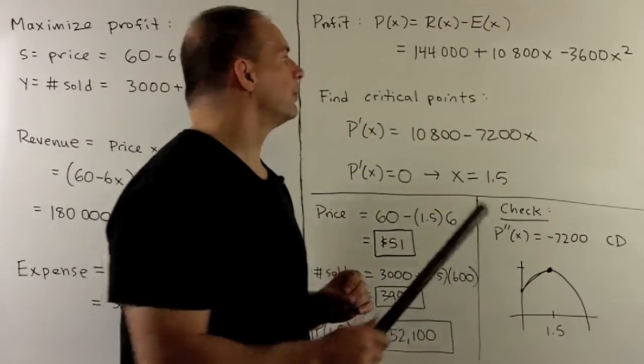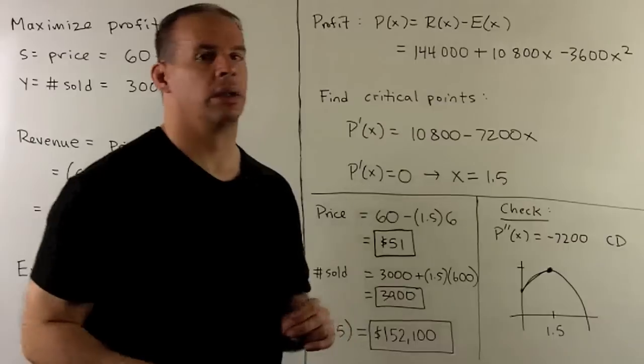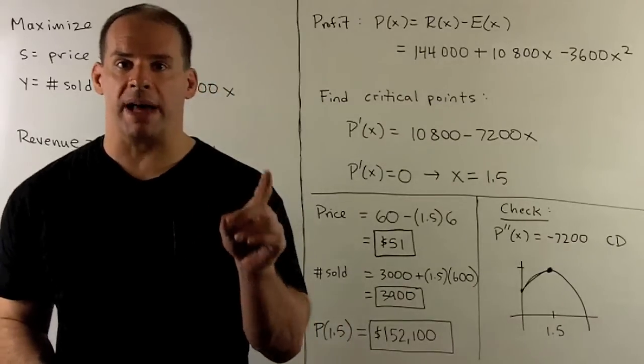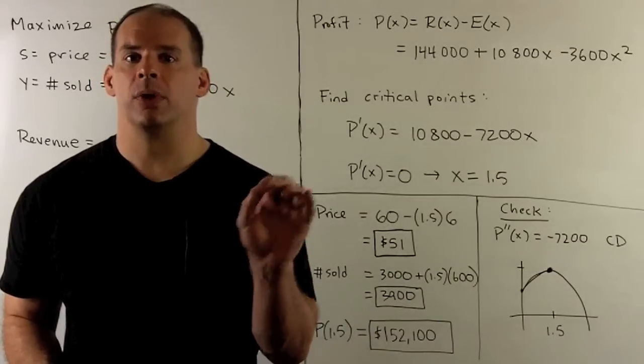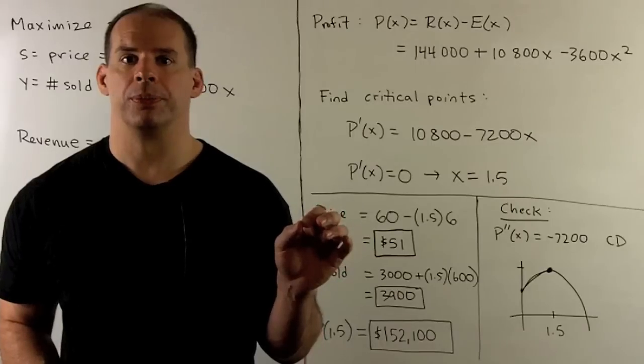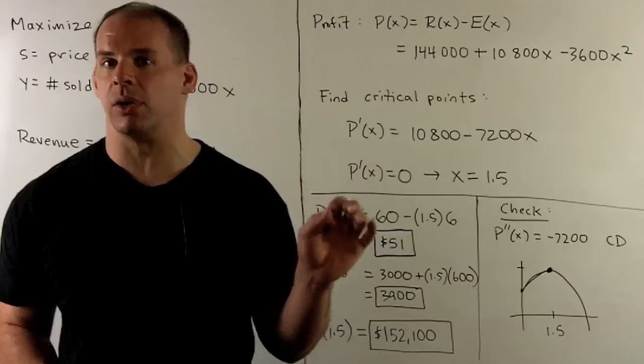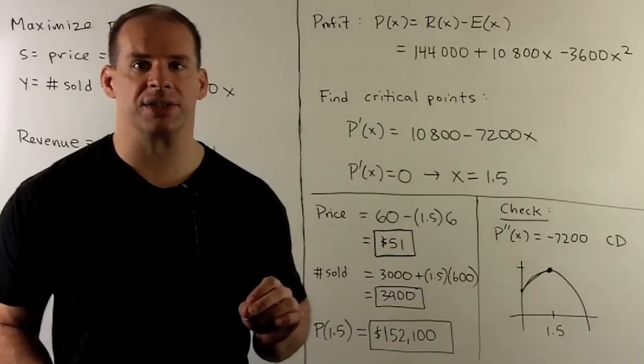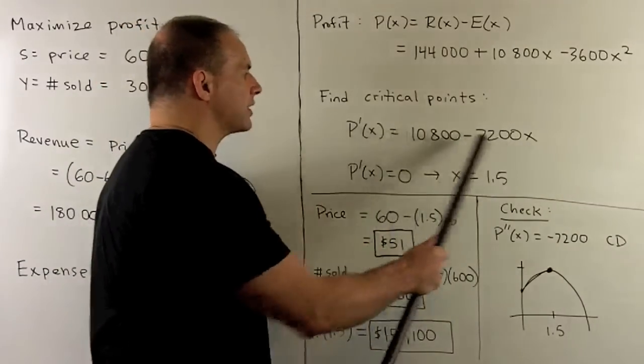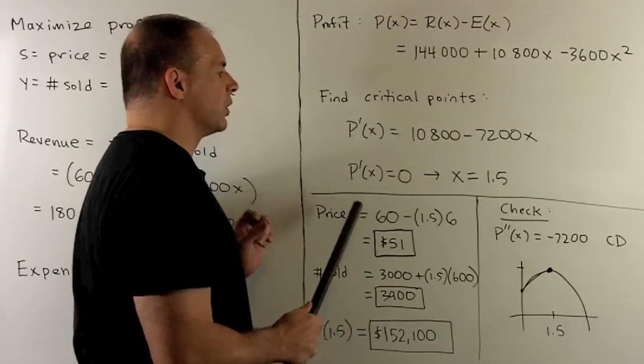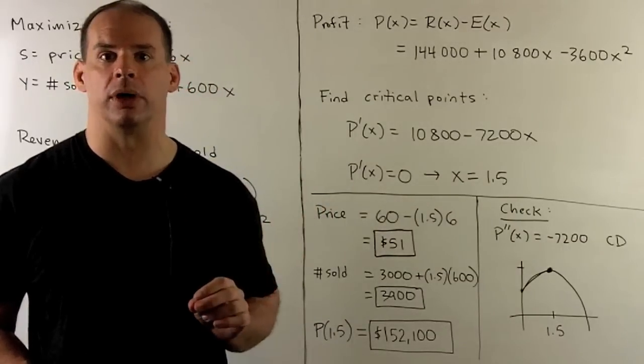In order to maximize, our next step is to take the derivative and look for critical points. Recall the critical points are going to be where the derivative is equal to zero or does not exist. In this case, we have a derivative for all X, so we're going to set this equal to zero and solve. We get X equal to one-half for our only critical point.